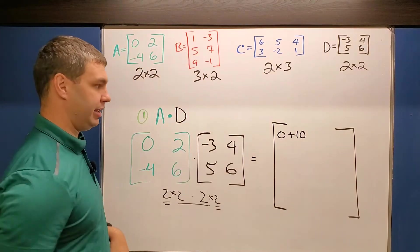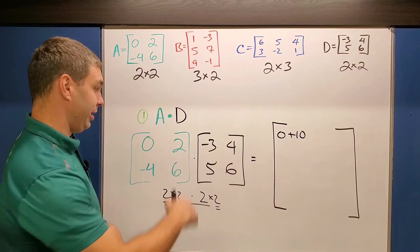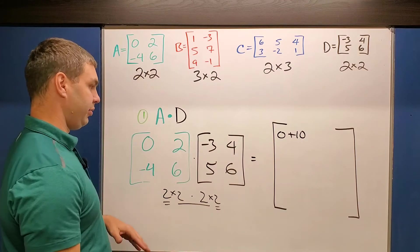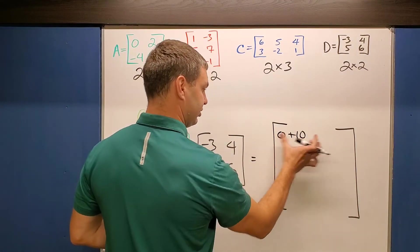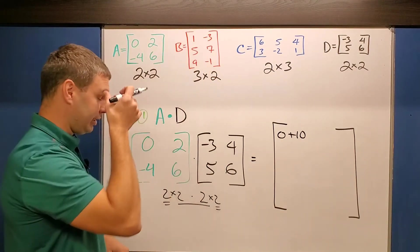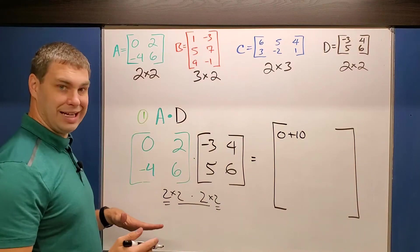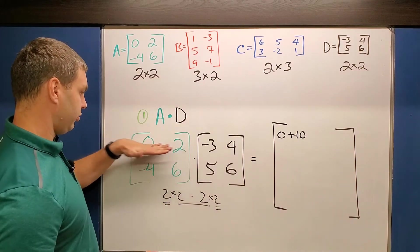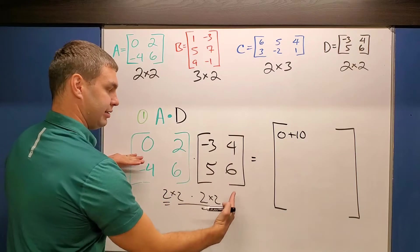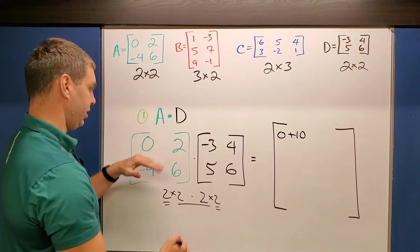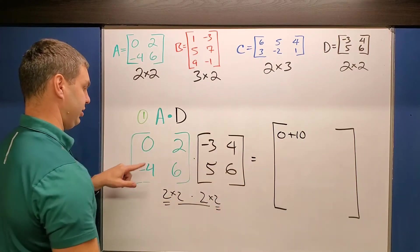My next element for this spot over here, this is a 2×2. Remember the next element that we're going to do is we're going to now take our first row times our second column. First row in our first matrix times our second column in our second matrix.